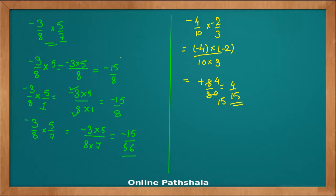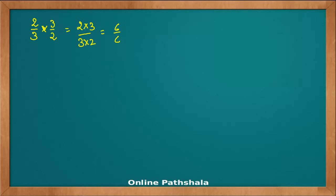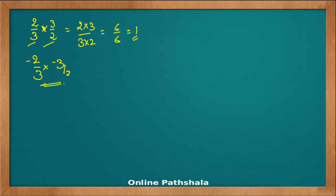This explains how we multiply rational numbers. The next concept is the multiplicative inverse. If I have 2 by 3 and multiply it by 3 by 2, I get 2 into 3 over 3 into 2, which is 6 by 6, which is 1. As we have already learned with fractions, when we arrive at 1, we say 2 by 3 and 3 by 2 are multiplicative inverses. The same is true for rational numbers: minus 2 by 3 and minus 3 by 2 are also multiplicative inverses because their product gives the identity 1. That's all for today's video on multiplication.